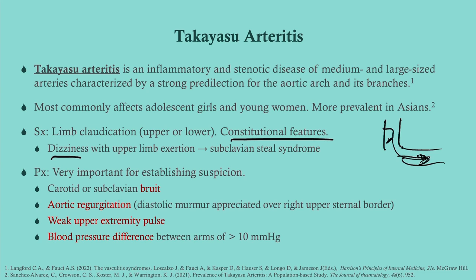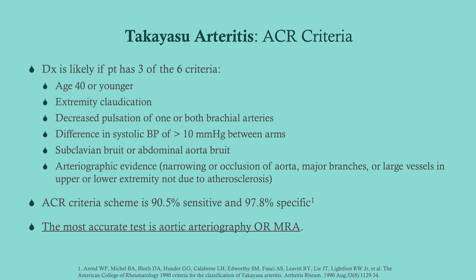These are the ACR criteria for Takayasu's arteritis. Takayasu's is often clinically evident because it presents in a unique way. Key criteria include age under 40, extremity claudication, decreased pulses, blood pressure difference between arms, a bruit on auscultation, and arteriogram findings — using these criteria together is very sensitive and specific. The most accurate test is arteriography or MRA.